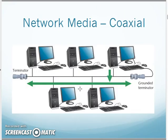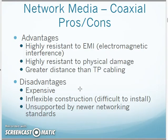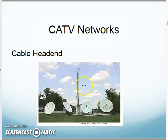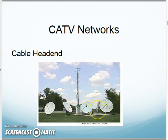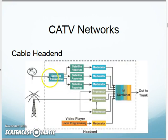With cable TV networks, they acquire signals through satellites at the head end. The head end is basically an antenna farm at the cable TV company — multiple satellite dishes, multiple antennas — pulling in local television stations, satellite signals from ESPN, movie channels, and so forth. All that gets modulated together: signals coming in from different antennas get modulated into channel 1, channel 10, channel 50, channel 90, and that is sent across. All these signals are modulated into a single cable coming out to your house.